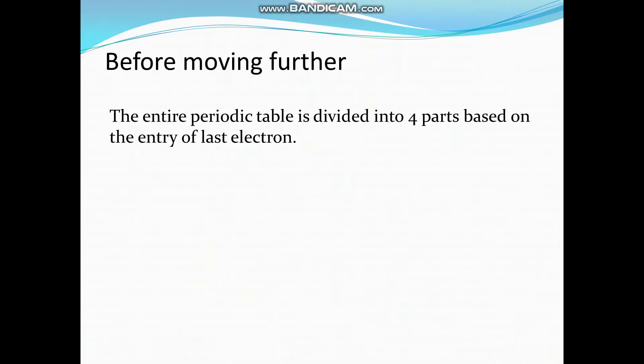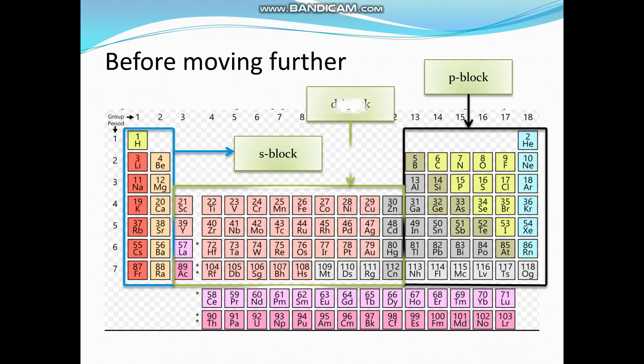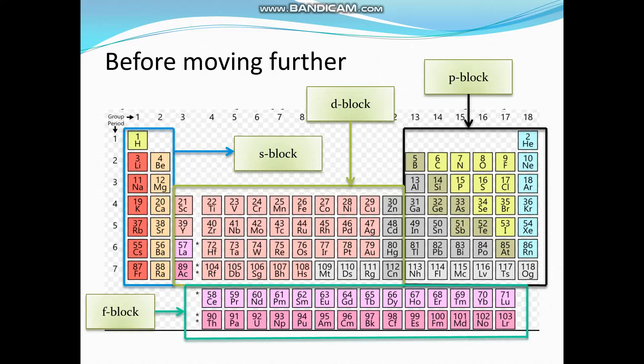You all know that the periodic table is divided into four parts based on the entrance of the last electron. First is s block, p block, d block and finally f block.